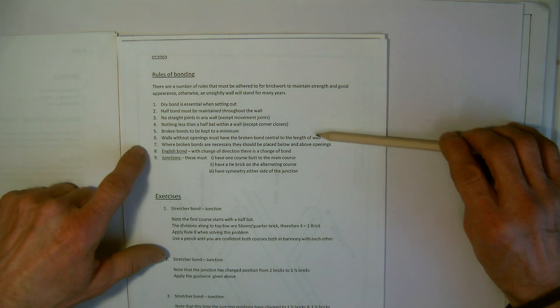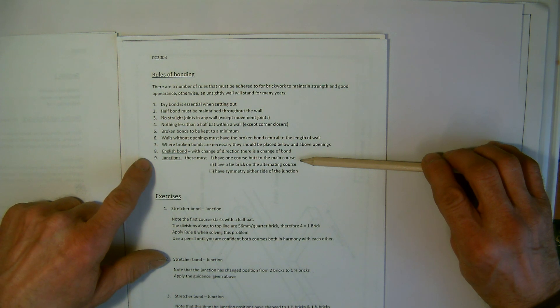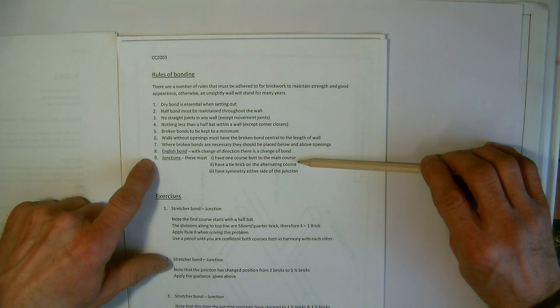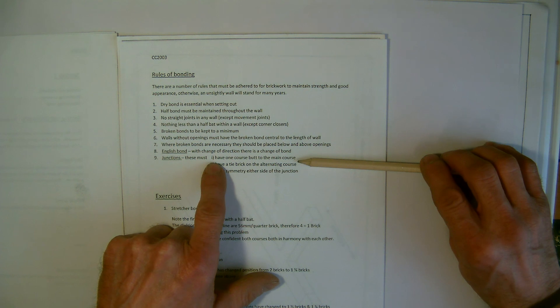Then we're going to jump to rule nine because the exercises we're going to be looking at, the first three are all going to be junctions and how we bond those. So the rules that we have to remember for junctions are, we have three here: one course must butt the main course. Again, I'll go into this in a little bit more detail when we look at the drawing.